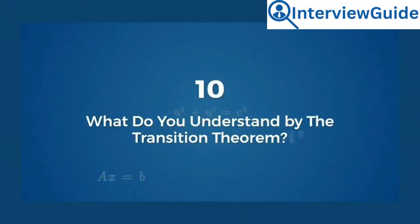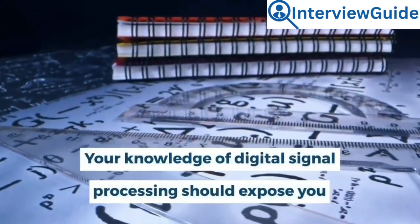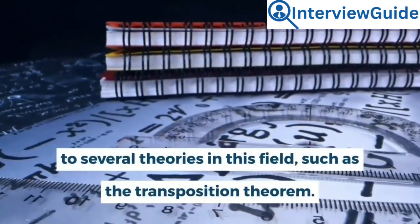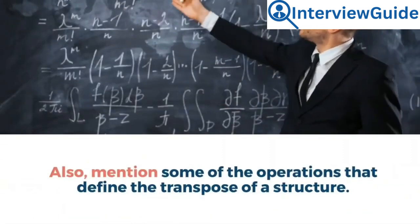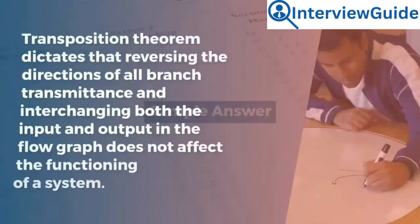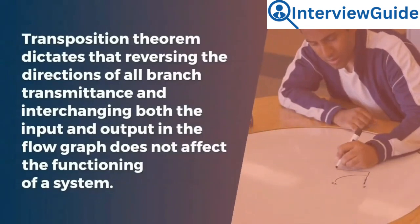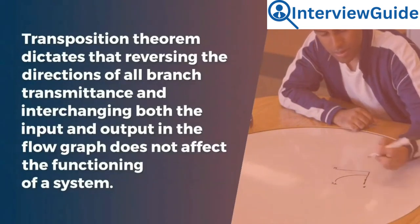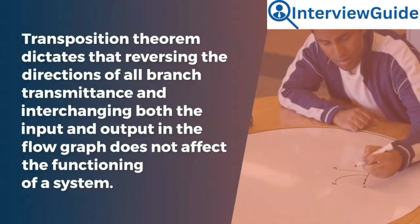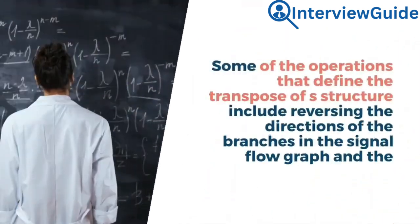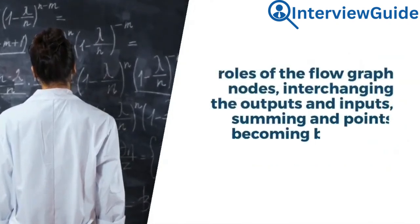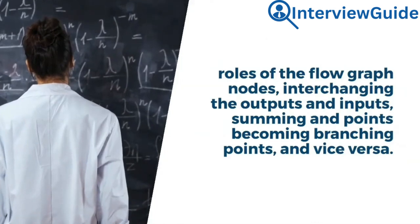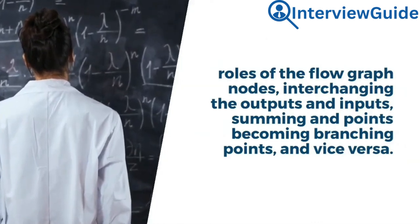Question 10: What do you understand by the transposition theorem? Sample answer: The transposition theorem dictates that reversing the directions of all branch transmittances and interchanging both the input and output in the flow graph does not affect the functioning of a system. Some of the operations that define the transpose of a structure include reversing the directions of the branches in the signal flow graph, interchanging the outputs and inputs, and summing points becoming branching points and vice versa.